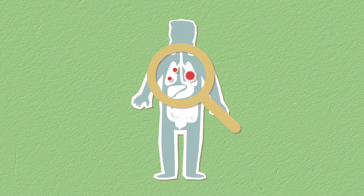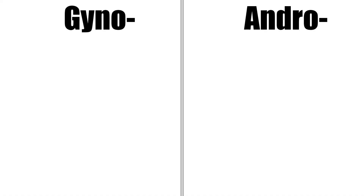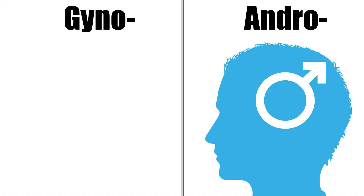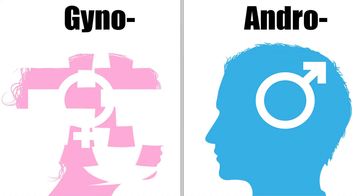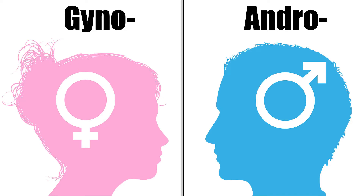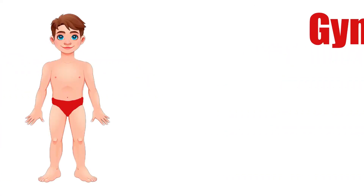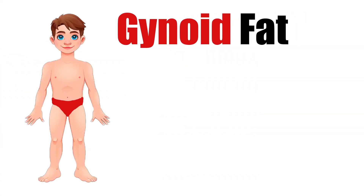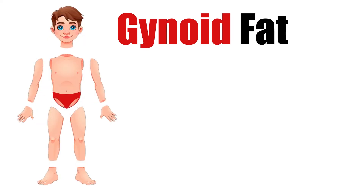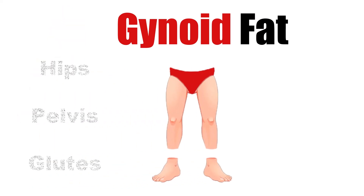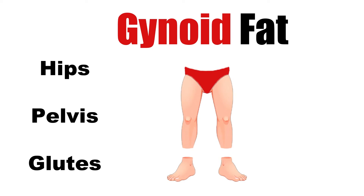and hormonal imbalances. 'Andro' is the prefix for male and 'gyno' is the prefix for women. Android fat is more common in males, and gynoid fat is more common in women. Gynoid fat is the fat that accumulates around the hips and buttocks. People with gynoid shapes actually have less risk of metabolic and heart disease than their Android counterparts,